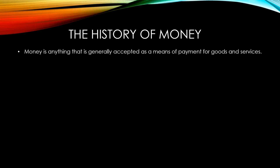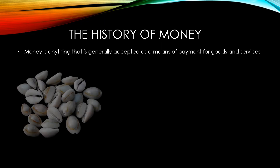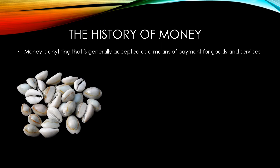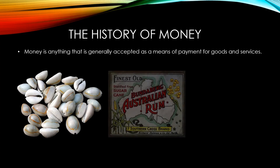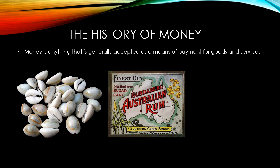In the early times, things like cowrie shells were used as money. Throughout time, a variety of things have been used as money. In the early days of Australian settlement, rum was frequently used as a form of currency, particularly on the black market.